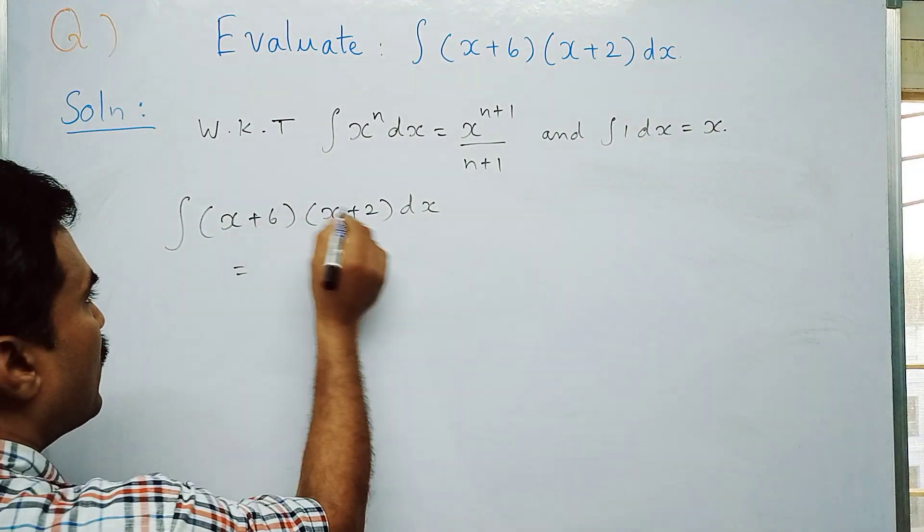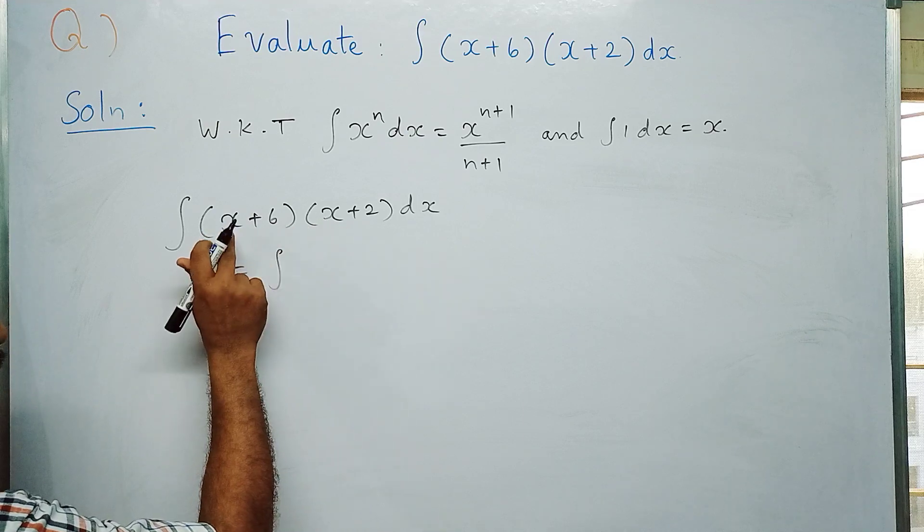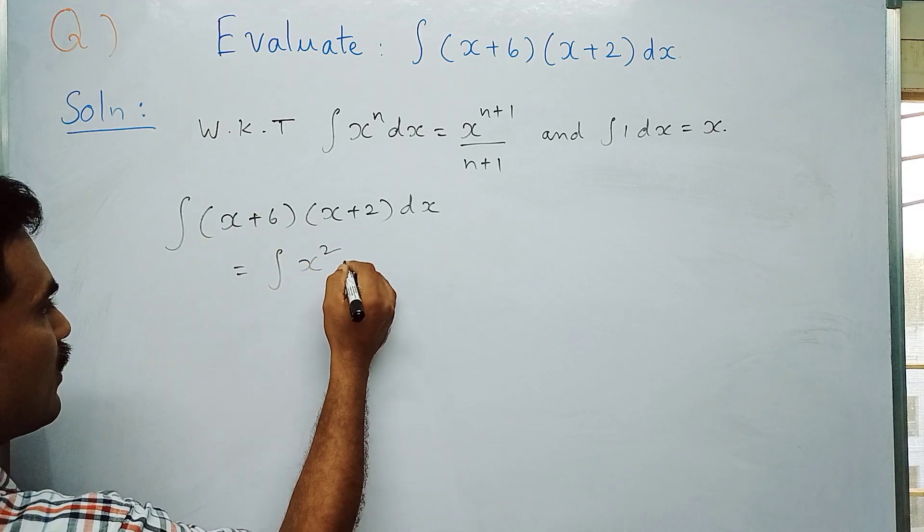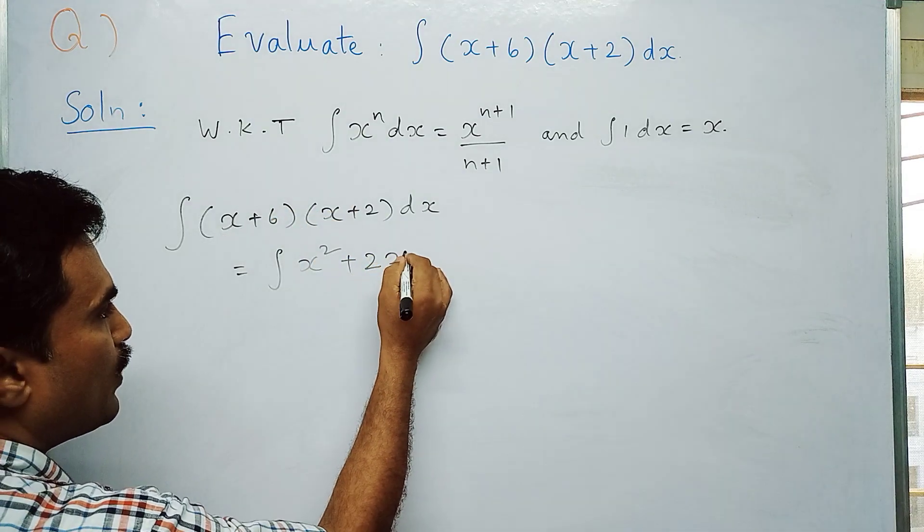We have to simplify this by multiplying each term with other terms. Then we will get integral: x into x gives x², plus x into 2 gives 2x, plus 6 into x, plus 6 into 2 is 12, dx.